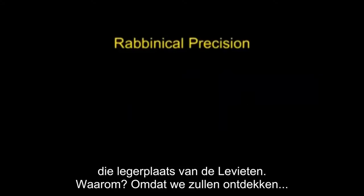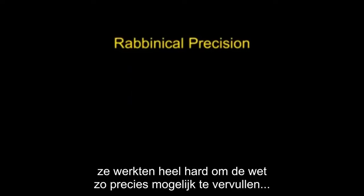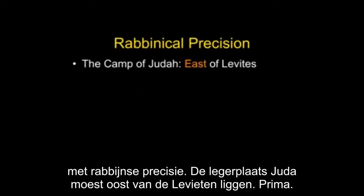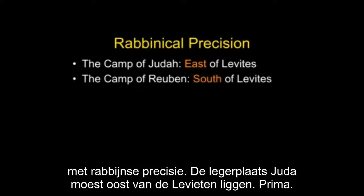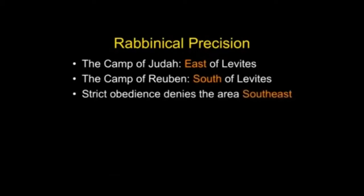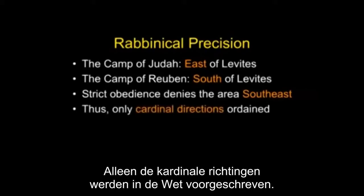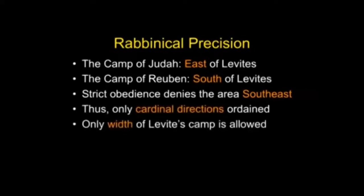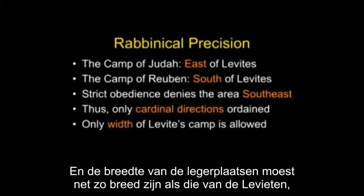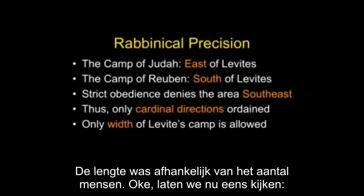We're going to discover that the rabbis worked very hard — give them credit — they really worked hard to fulfill the law as precisely as they understood it. That rabbinical precision: the camp of Judah is instructed to camp east of the Levites. The camp of Reuben was to the south of the Levites, no problem. But that means no one can camp southeast, because that's neither south nor east. So that's a vacant area, apparently. Only cardinal directions were ordained in the law. And the width of the camp would be as wide as the Levites' camp and still conform, but not larger than that.